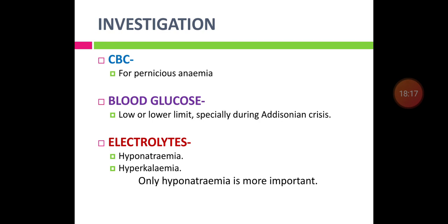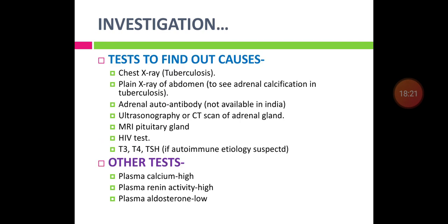Tests to find the cause include: chest X-ray to assess for tuberculosis; plain X-ray of abdomen to see calcification from tuberculosis; autoantibody estimation against 21-hydroxylase (usually not available in India); ultrasonography and CT scan to assess adrenal gland pathology; MRI of the pituitary gland; HIV test; and thyroid profile (T3, T4, TSH) if autoimmunity is suspected.